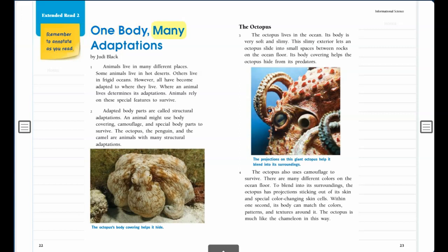One Body, Many Adaptations, by Judy Black. Animals live in many different places. Some animals live in hot deserts. Others live in frigid oceans. However, all have become adapted to where they live. Where an animal lives determines its adaptations. Animals rely on these special features to survive.